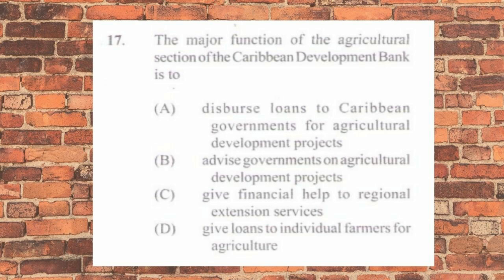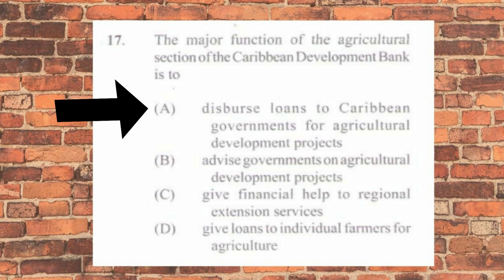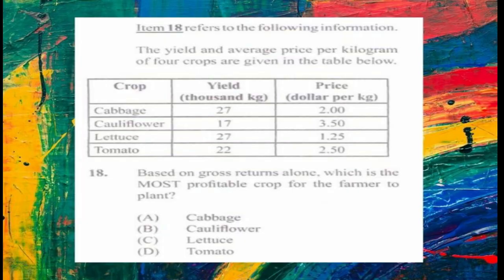Question number seventeen: the major function of the agricultural section of the Caribbean Development Bank is to a) disburse loans to Caribbean governments for agricultural development projects. The answer is a) disburse loans to Caribbean governments for agricultural development projects.